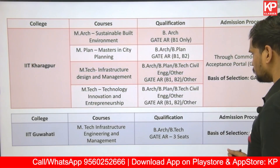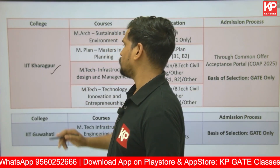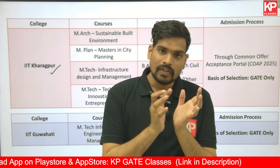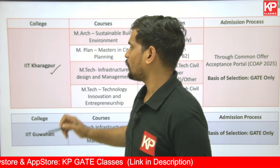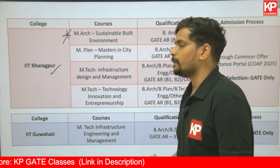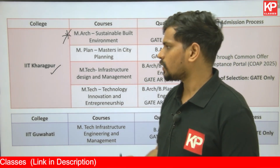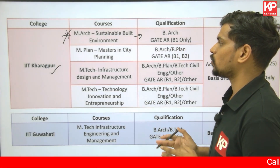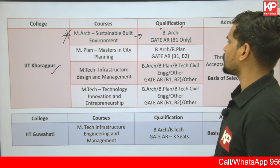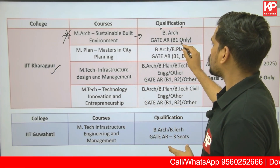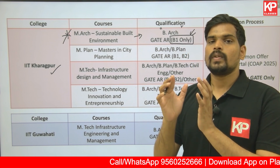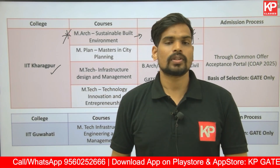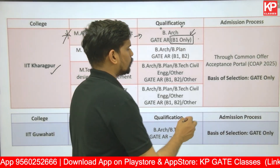At IIT Kharagpur, there are four courses for architecture and planning graduates. It is important to note that not just whether you qualify GATE Architecture, but which part you selected also matters at IIT Kharagpur. For M.Arch in Sustainable Built Environment — a relatively new course — only B.Arch graduates are eligible, just like IIT Roorkee. Additionally, at Kharagpur you must have attempted B1 (Architecture part) in your GATE Architecture paper as per the official brochure.